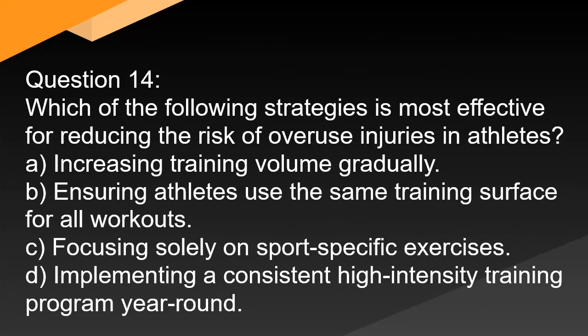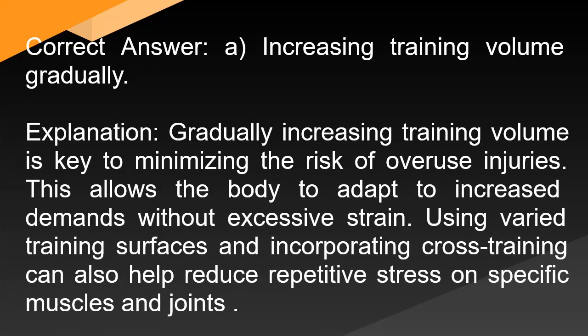Question 14: Which of the following strategies is most effective for reducing the risk of overuse injuries in athletes? A. Increasing training volume gradually. B. Ensuring athletes use the same training surface for all workouts. C. Focusing solely on sport-specific exercises. D. Implementing a consistent high-intensity training program year-round. Correct answer: A. Gradually increasing training volume is key to minimizing the risk of overuse injuries, allowing the body to adapt to increased demands without excessive strain. Using varied training surfaces and incorporating cross-training can also help reduce repetitive stress on specific muscles and joints.